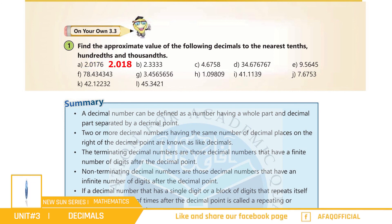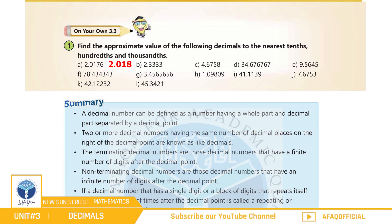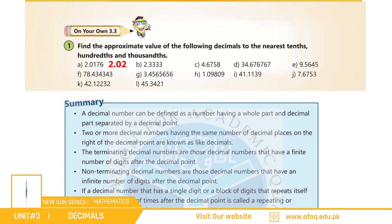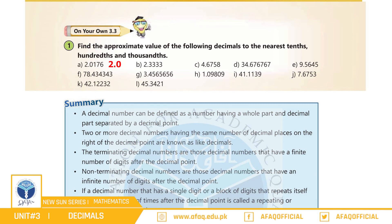تو ہمارے پاس نمبر آئے گا 2.018۔ اب eight کو دیکھیں تو یہ بھی five سے بڑا ہے، اس لیے eight کو ختم کر کے one میں one add کر دیتے ہیں — نمبر بنے گا 2.02۔ اب two کو دیکھیں تو two، five سے کم ہے، اس لیے two کو ختم کر کے zero میں کچھ add نہیں کریں گے — نمبر بنے گا 2.0 جو کہ برابر ہے 2 کے۔ اس طرح سے اگلے سوال خود حل کریں۔